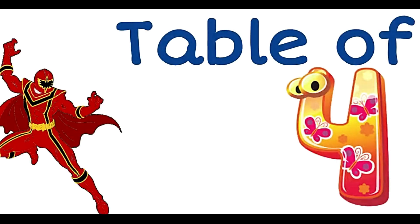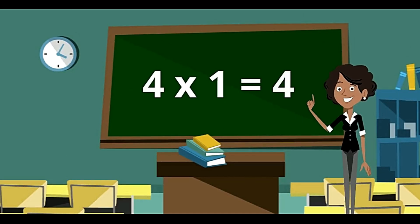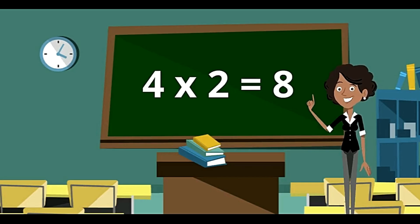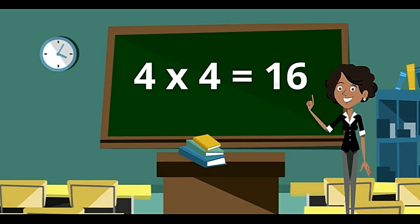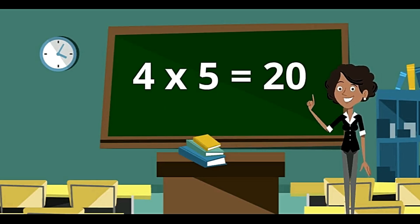Now, we will be learning table of 4. 4 ones are 4. 4 twos are 8. 4 threes are 12. 4 fours are 16. 4 fives are 20.